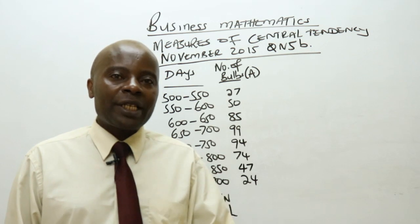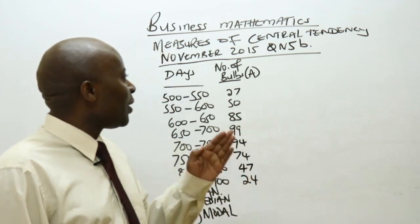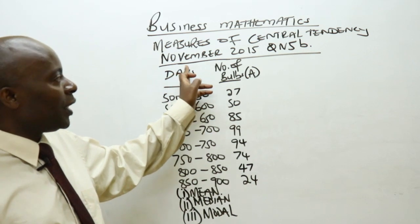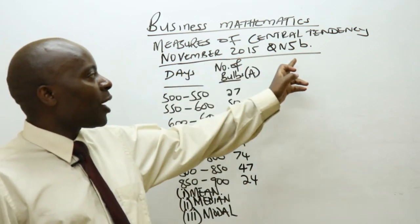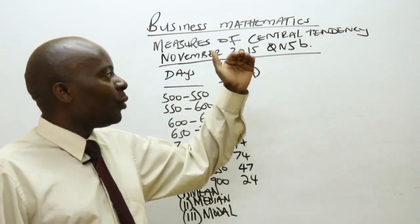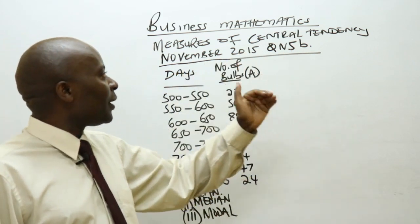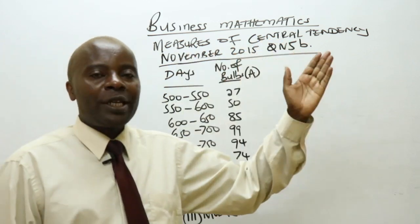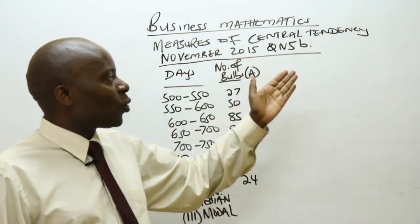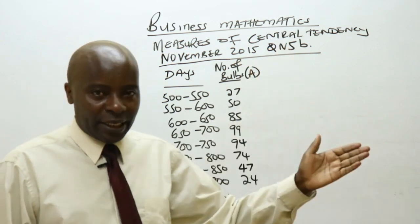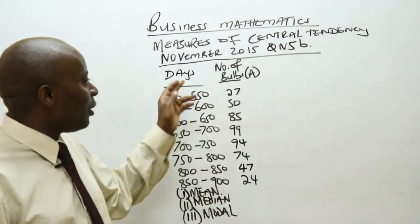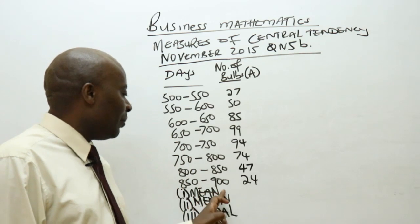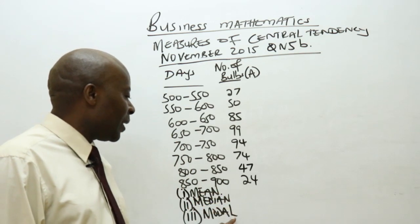I would want us to look at this question that was tested in November 2015, question number 5B, which will help us to go through measures of central tendency. This question gave us a distribution and they wanted us to calculate the mean, median, and mode.